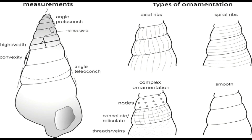To study the organism's morphology, we should know about the types of ornamentation. There are various types of ornamentation which might be helpful for diagnosing or identifying an organism. First is axial ribs. Then there are spiral lines or concentric lines. Then there are complex ornamentation types such as nodes, cancellate, reticulate, threads, vanes, smooth surface, concentric lines, and spikes. These are the morphological characteristics of Gastropoda.